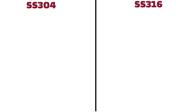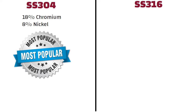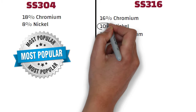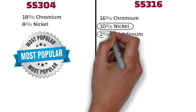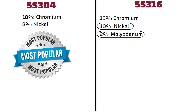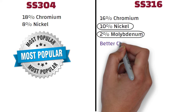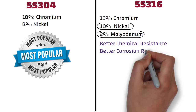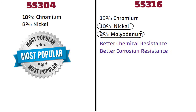SS304 stainless steel contains 18% chromium and 8% nickel. This is considered to be one of the most popular stainless steels available in the market. Whereas stainless steel of 316 grade contains 16% chromium, 10% nickel and 2% molybdenum. The increased nickel content and inclusion of molybdenum allows grade 316 stainless steel to have better chemical resistance and better corrosion resistance than 304 stainless steel.